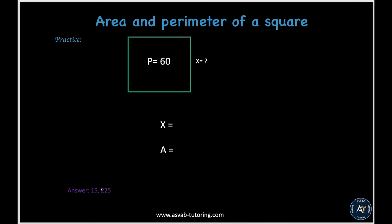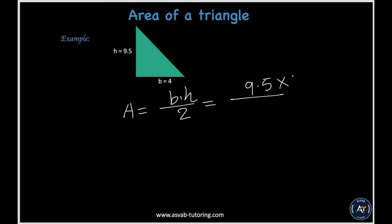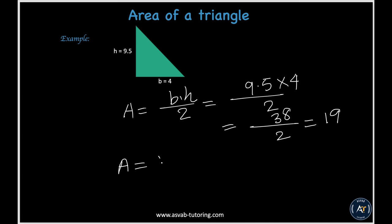Now we'll learn how to find the area of a triangle. The formula is: area equals base times height divided by 2. Plugging in the values — 9.5 times 4 divided by 2 — gives 38 divided by 2, which equals 19. So the area of this triangle is 19.